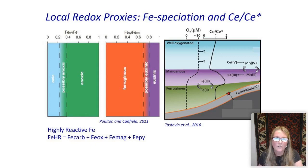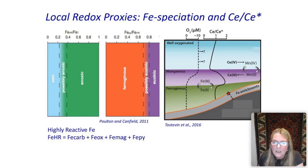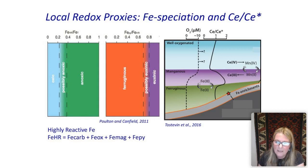Iron speciation only tells us if there was a quantity of free oxygen — it can't differentiate between highly oxygenated and scarcely oxygenated environments; it just picks up an oxic signature. To test whether earliest metazoans were adapted to low oxygen conditions, we needed an additional proxy: the cerium anomaly. The cerium rare earth element is very closely tied to the redox transition from manganese IV to manganese III, which happens at a much higher redox potential than the ferric-to-ferrous iron couple. By combining iron speciation with the cerium anomaly, we can distinguish between anoxic ferruginous, euxinic, low-oxygen manganese waters, and well-oxygenated waters.